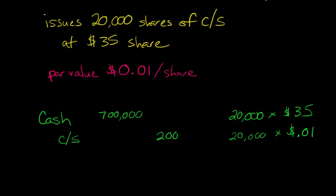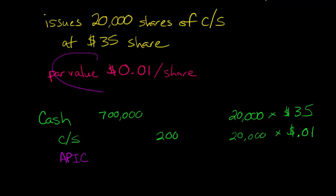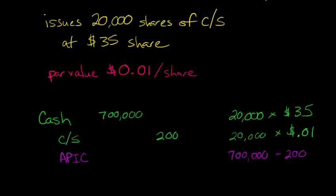And now we've got a problem — this doesn't balance. We've got $700,000 on one side and $200 on the other. So what's going on here? That's where our additional paid-in capital account comes in — I'm just going to abbreviate that APIC, additional paid-in capital. It's the amount that the firm received above and beyond the par value. How do we compute that? It's quite simple: we just take that $700,000 and subtract out the $200. So $700,000 minus $200 gives us our additional paid-in capital, which is $699,800.